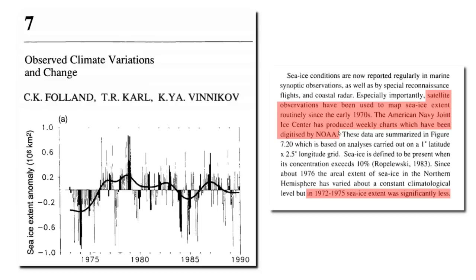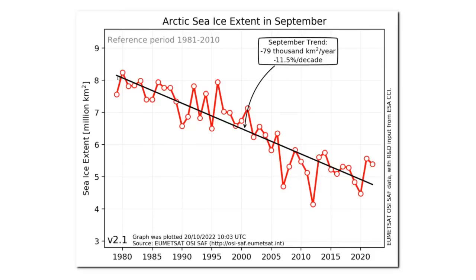The American Navy Joint Ice Center has produced weekly charts which have been digitized by NOAA. In 1972 to 1975, sea ice extent was significantly less, and we can see that in the United Nations graph. Ice extent was much lower in the early 1970s and it peaked in 1979. So by starting their graphs at the peak year, they can create a linear fake downward trend.